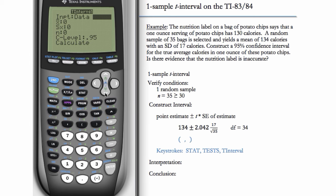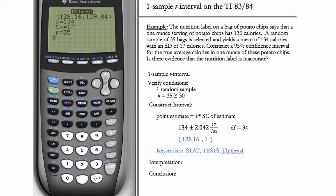What is X bar? Our X bar is 134, our S or sample SD is 17, and the sample size is 35. Our C level in this case is 0.95. Make sure to change this if you're doing something other than a 95% confidence interval. And then we can do CALCULATE, and we get our left endpoint and right endpoint. So we get 128.16 to 139.84.